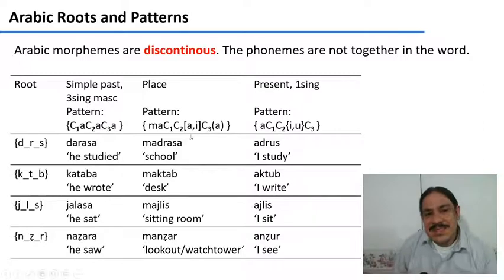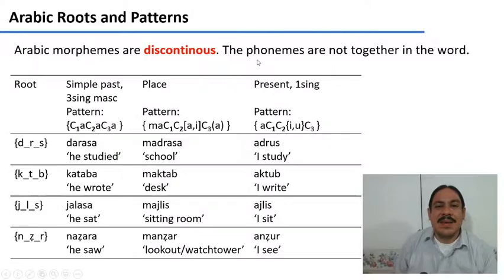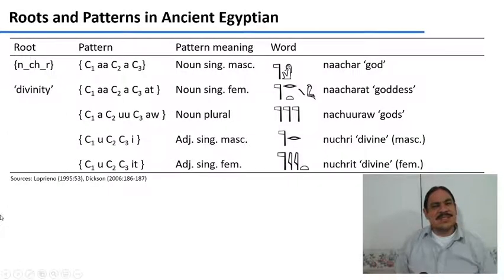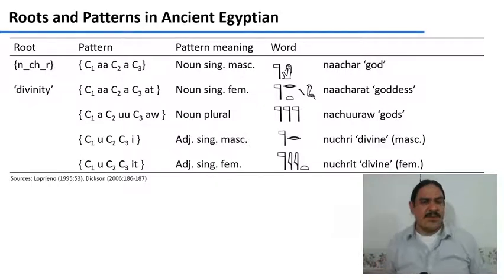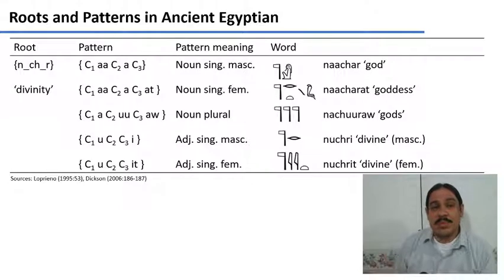This type of morphology is called root and pattern morphology, and it doesn't exist in a lot of language families in the world, but there are some languages that have it. For example, ancient Egyptian also had root and pattern morphology.